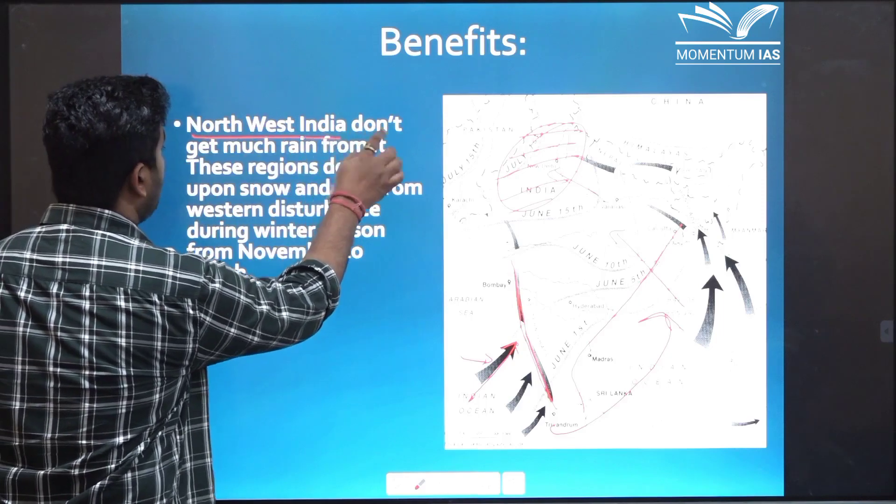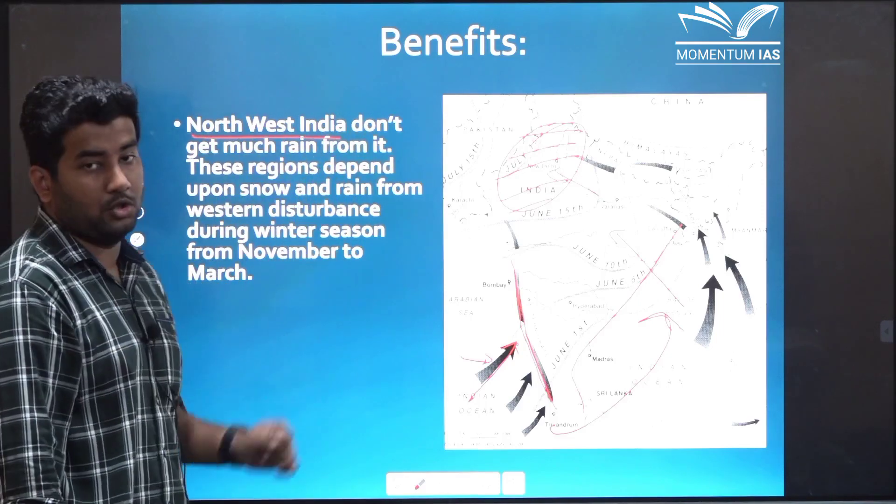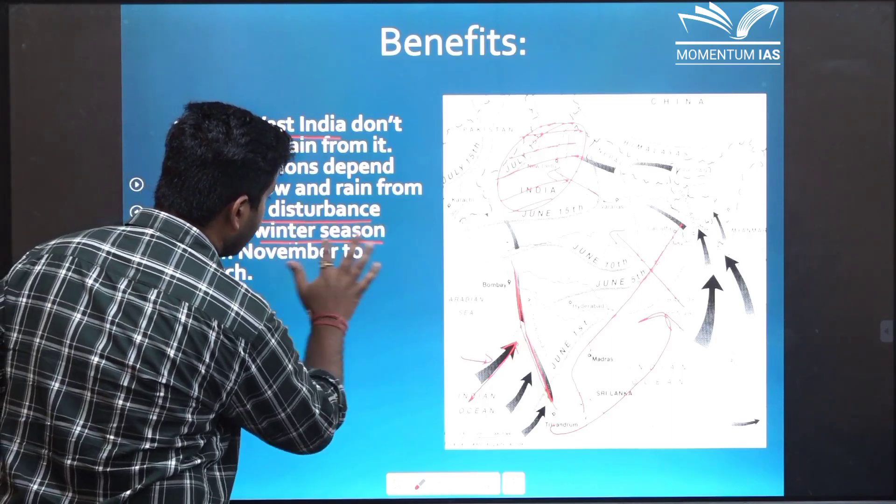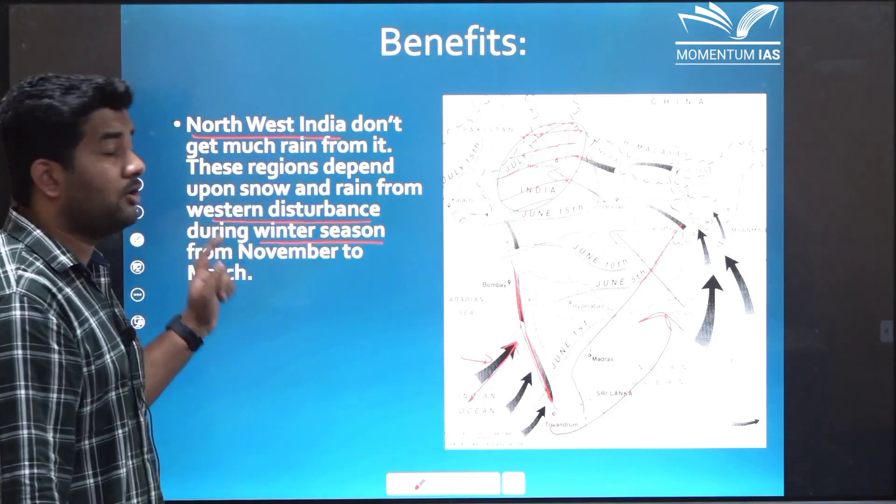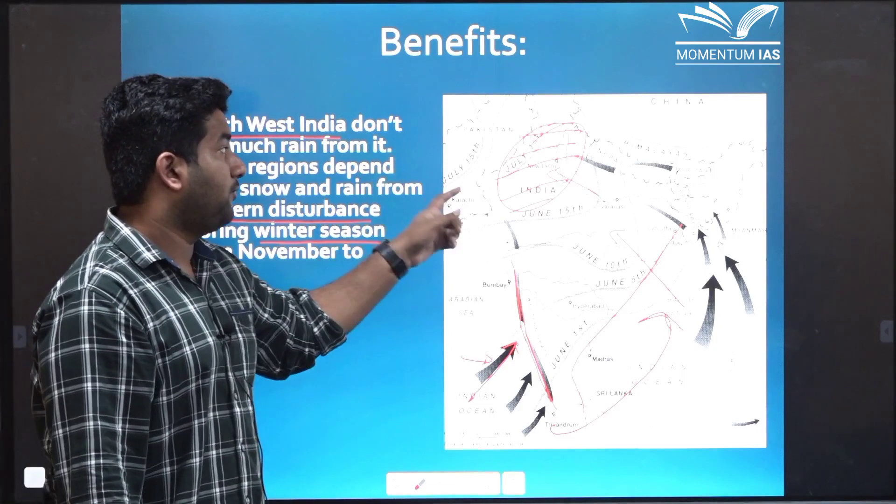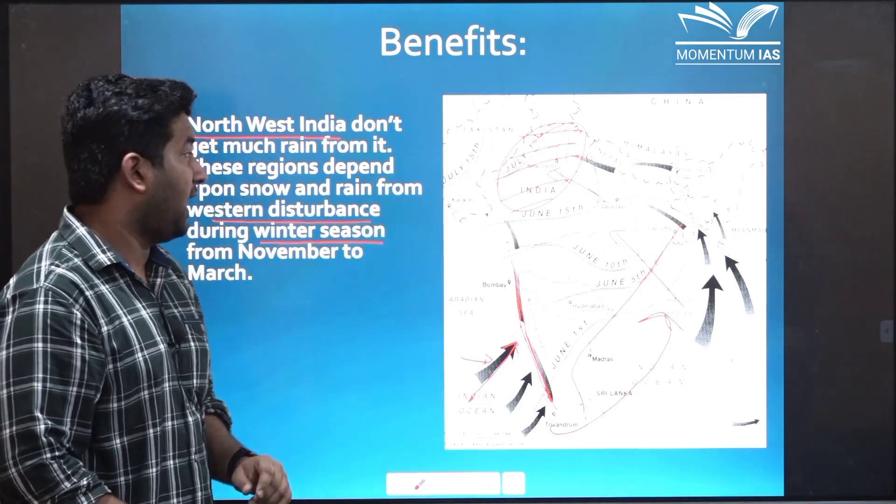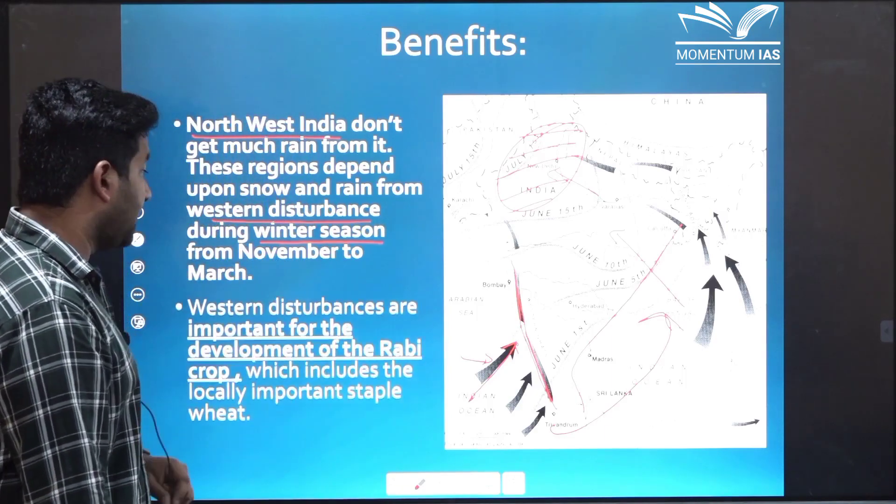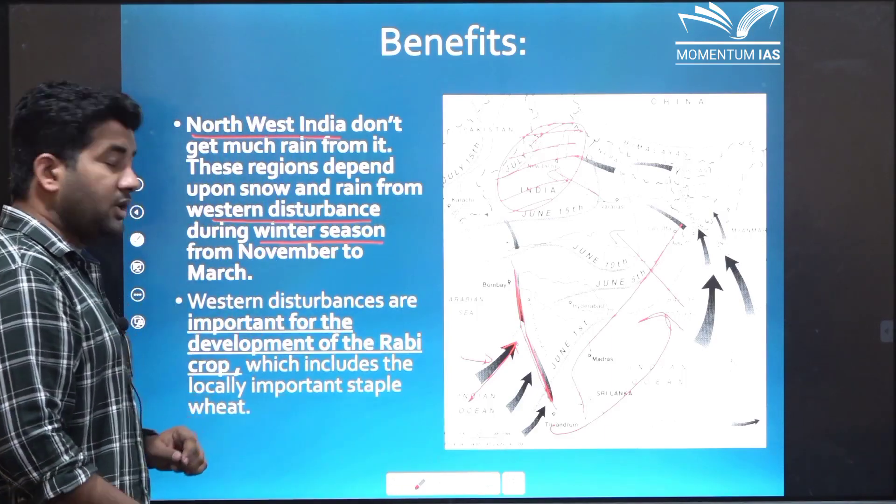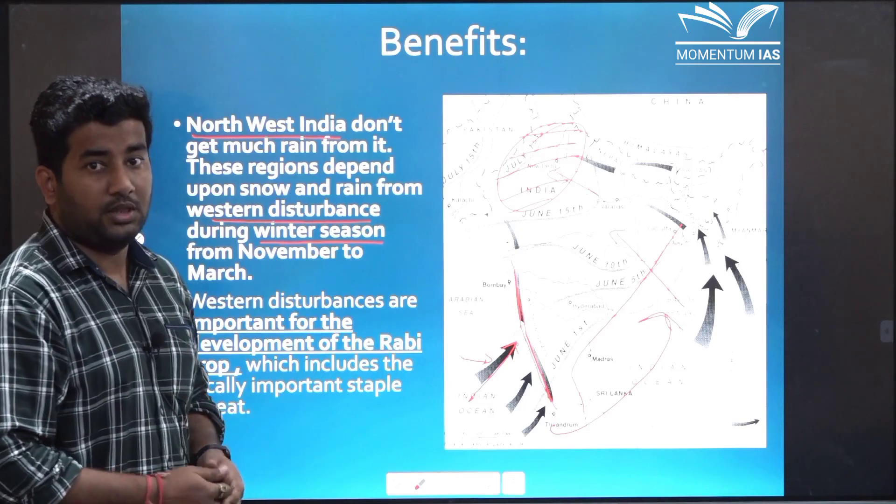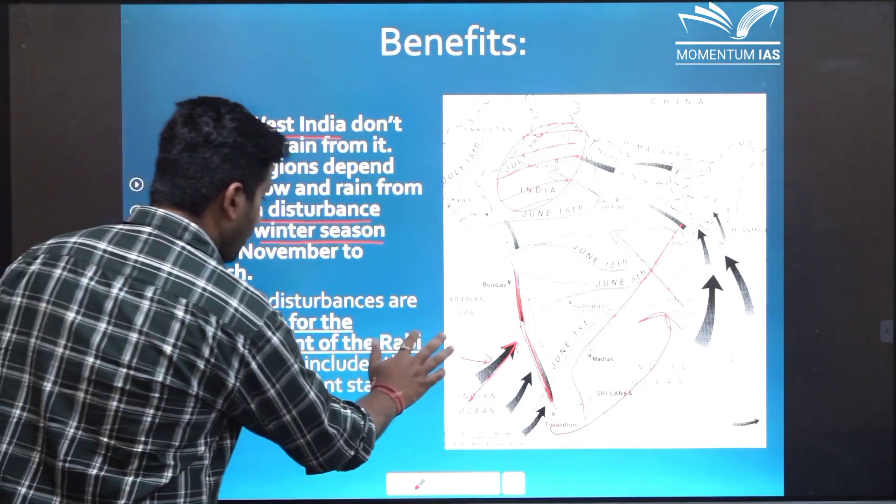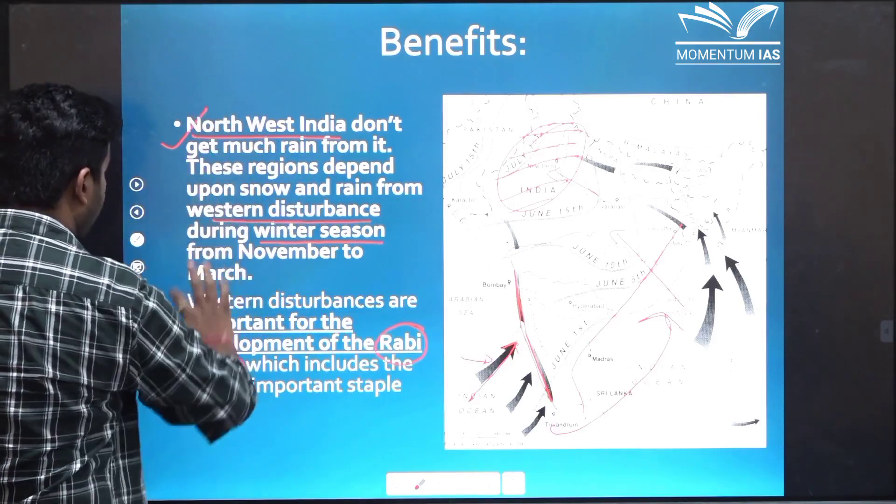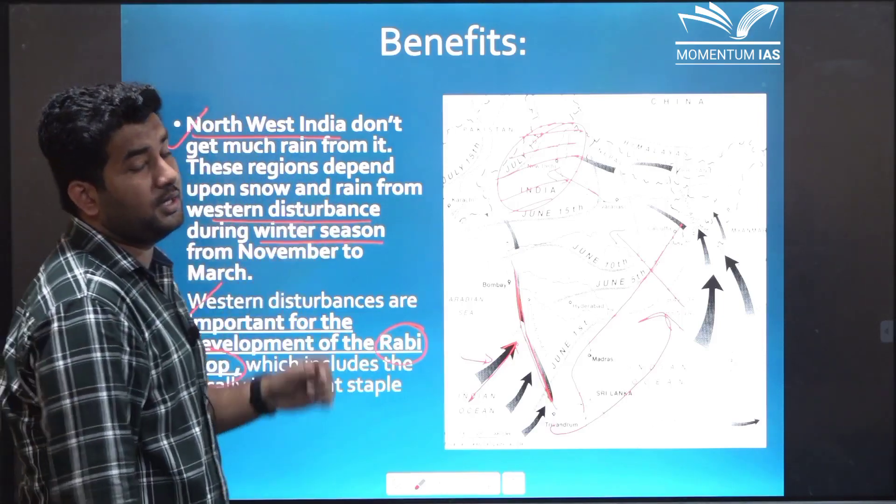These regions include some regions of Punjab, some regions of Rajasthan, J and K. This scarcity of water is fulfilled by western disturbances through winter rainfall. So that is the first benefit of western disturbances. Northwestern India don't get much rainfall from the Indian monsoon. Therefore western disturbances during the winter season, that is again a key term winter season from November to March, provides rainfall to this region and caters to the water scarcity of this region. Second, Rabi crops that means winter crops they also get water availability from western disturbances. These two are very crucial benefits as far as northwestern India is concerned.